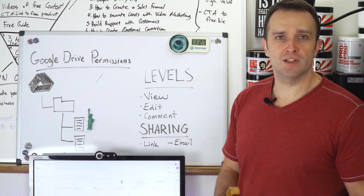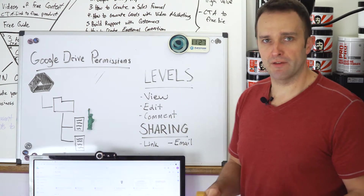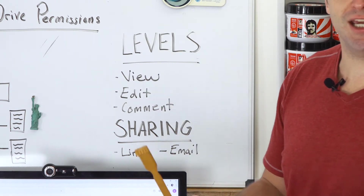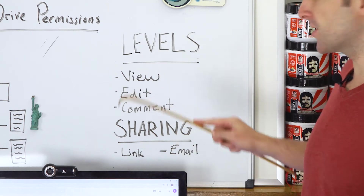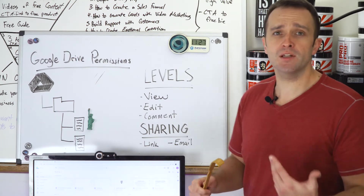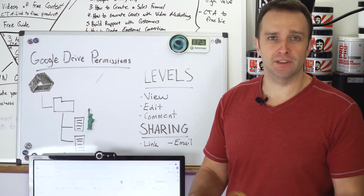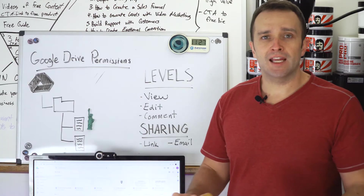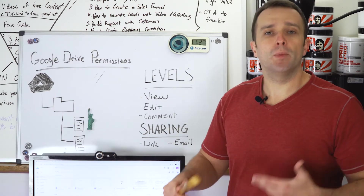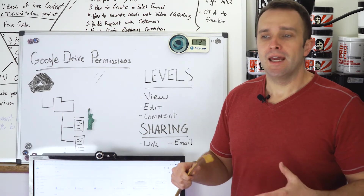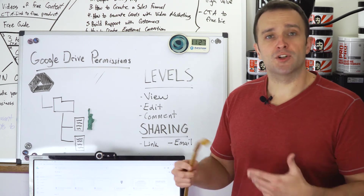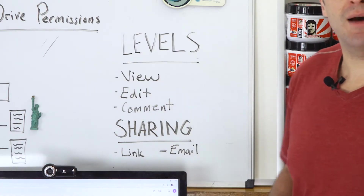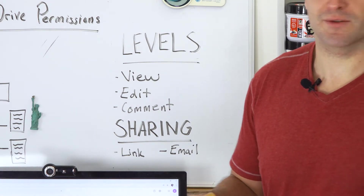There are a few different levels of permissions in Google Drive. If you want somebody to be able to open a document and look at it without making any changes, give them view permissions. If you want somebody to be able to add, delete, or update the formatting, give them edit permissions. For documents, if you want somebody to be able to create markup for changes that the document owner can then move forward with, give them comment permissions.